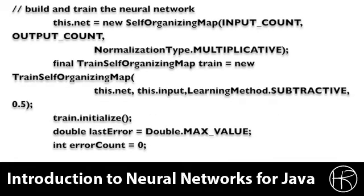Next, we set up to actually train the neural network. We are passing in the input count, the output count, and we are going to use multiplicative normalization for this neural network. We create a training object, and we are going to use the subtractive method, and we are going to also use a learning rate of 50%, or 0.5.